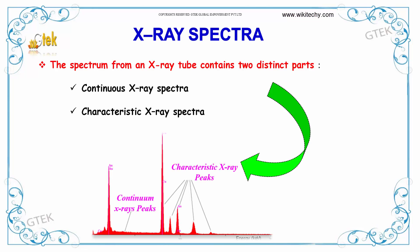We will talk about X-ray spectra. The spectrum from an X-ray tube contains two distinct parts: the continuous X-ray spectra and the characteristic X-ray spectra. This is your continuous and this one is characteristic X-ray spectra.